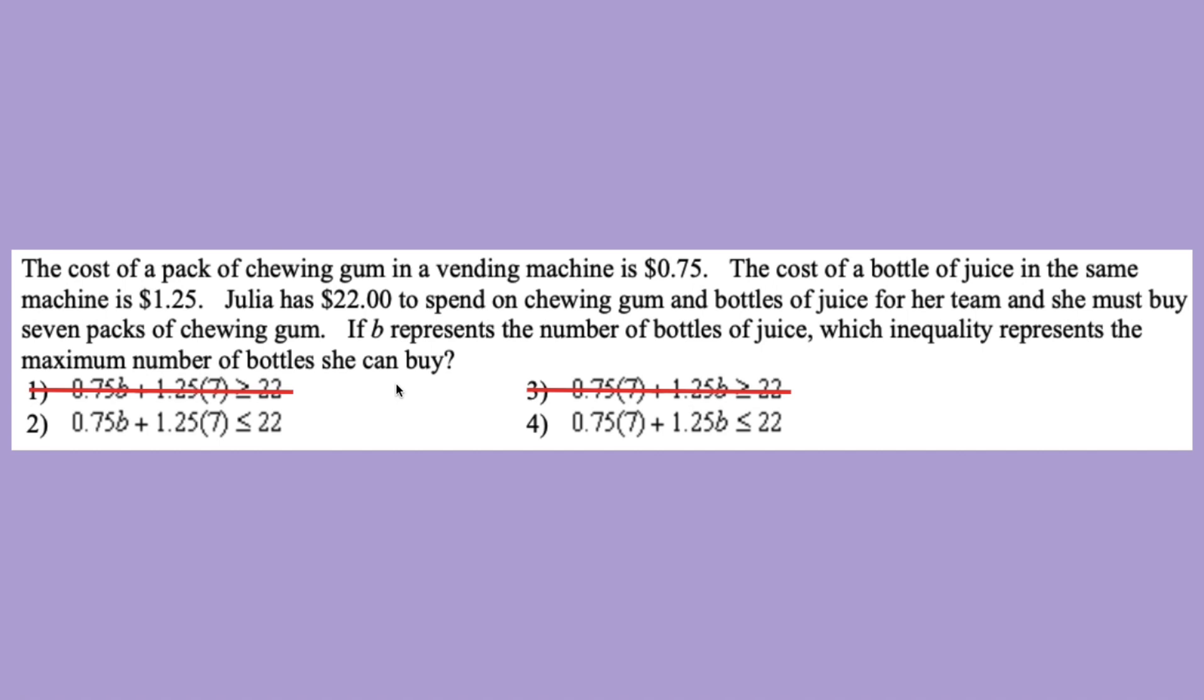Now, another clue that we can take is, they tell us that she must buy 7 packs of chewing gum. And if B represents the number of bottles of juice, so B is going to correspond with the cost of a bottle of juice, which is $1.25. And 7 packs should be substituted in to the cost of a pack of chewing gum, which is $0.75. So once we correlate that together, we have $0.75 times 7, which is right here. So our answer will be choice number 4.